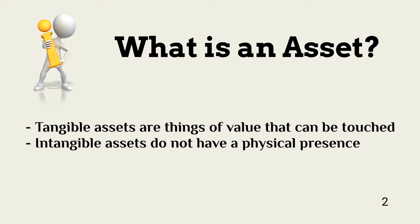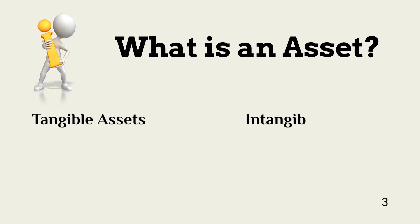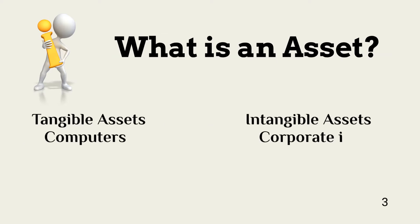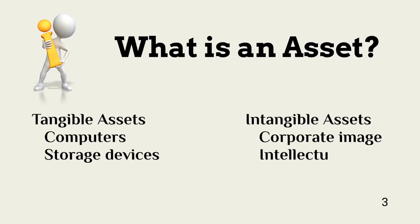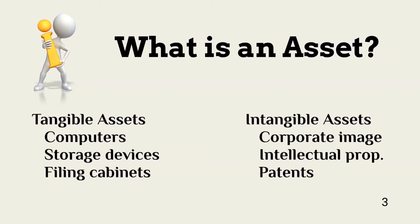Tangible assets are things you can touch. Intangible assets have no physical presence. Tangible assets include computers, storage devices, and filing cabinets. Intangible assets include intellectual property, such as trade secrets.